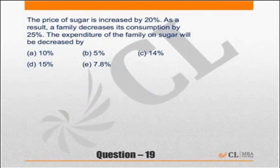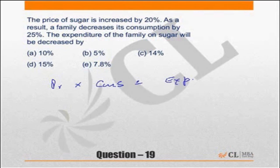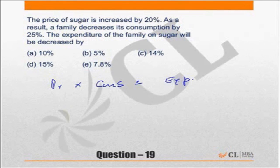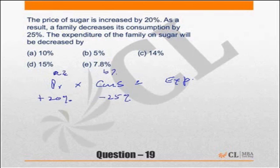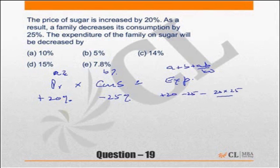Price into consumption should equal expenditure. Price of sugar increases by 20 percent, and the family decreases consumption by 25 percent. These are A percent and B percent, so the result is A plus B plus AB by 100, which gives plus 20 minus 25 minus 20 into 25 by 100.